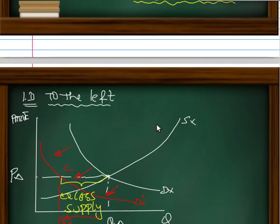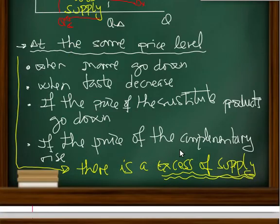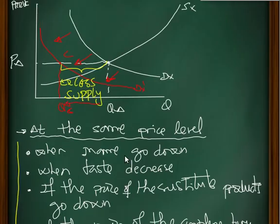The second one is when demand shifts to the left. At the same price level, it is when income goes down, when taste decreases, if the price of substitute products goes down, or if the price of the complementary product rises. As you see, there is a decrease of supply.